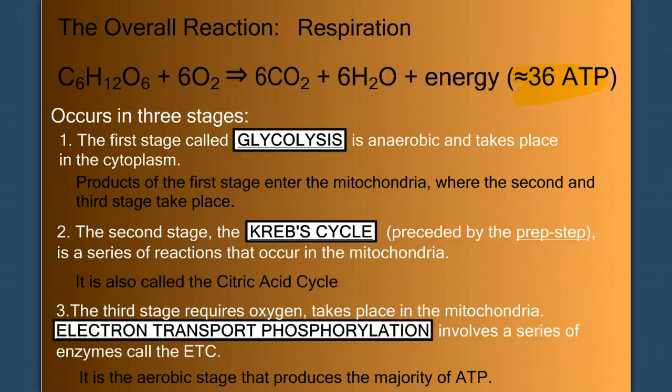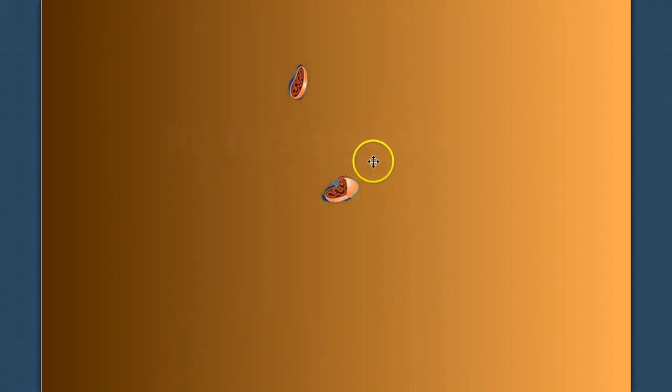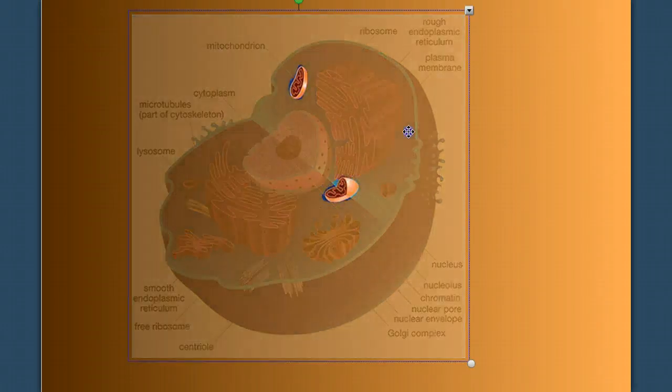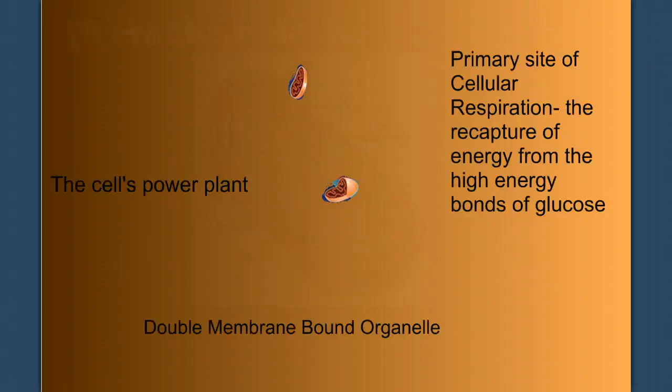Now let's take a look at where this occurs. Here we have a cell. I want to zoom in on some important organelles. The mitochondria. Let's take a closer look at these mitochondria.